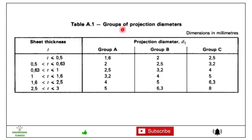Here you can see the group of projection diameters. For sheet metal thickness T less than 0.5, Group A is 1.6, Group B is 2, and Group C is 2.5 mm. This is the projection diameter d1 for different groups A, B, and C, and this is the sheet metal thickness variation.